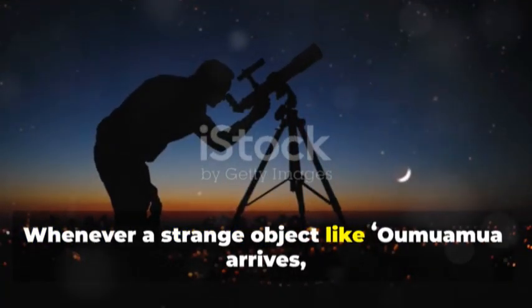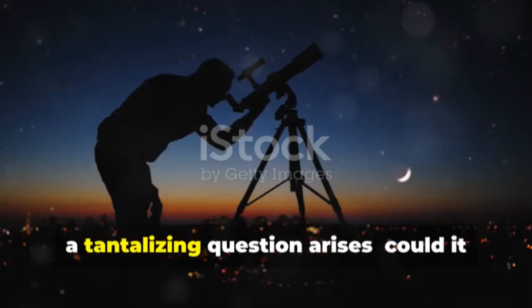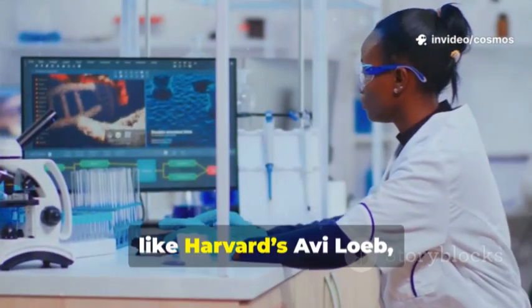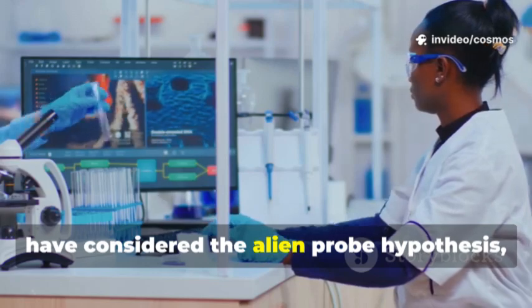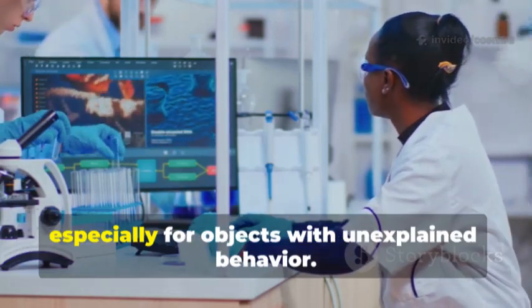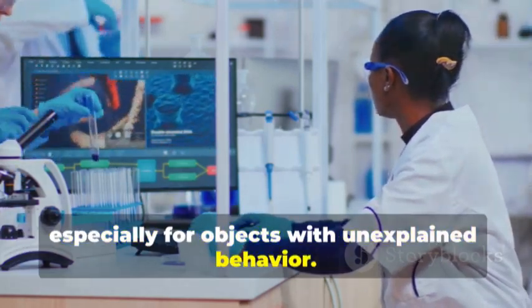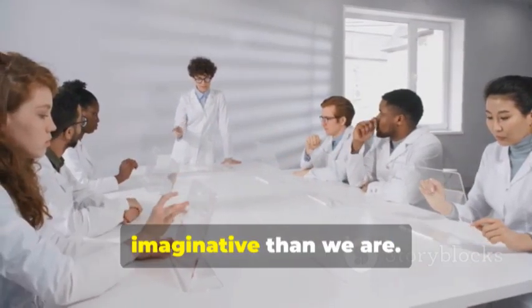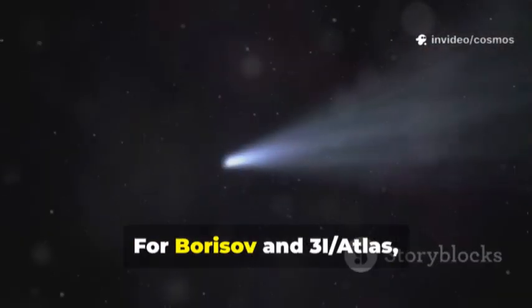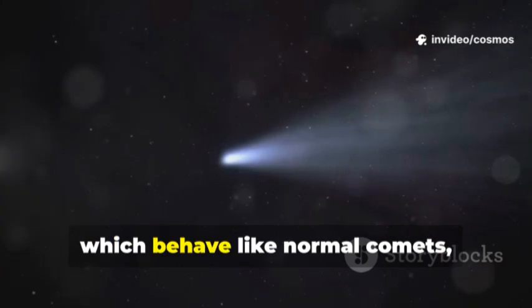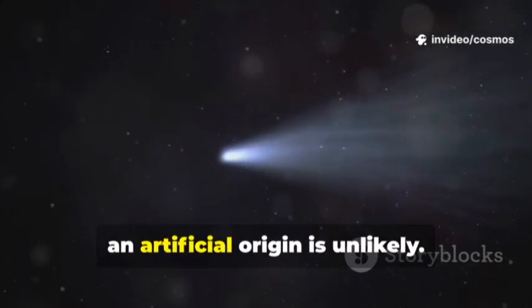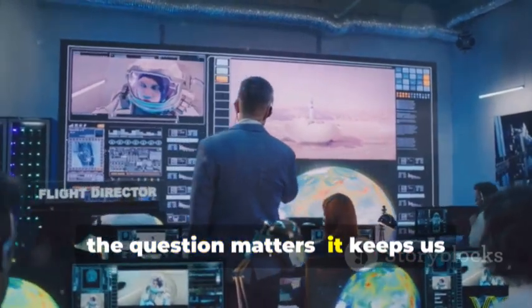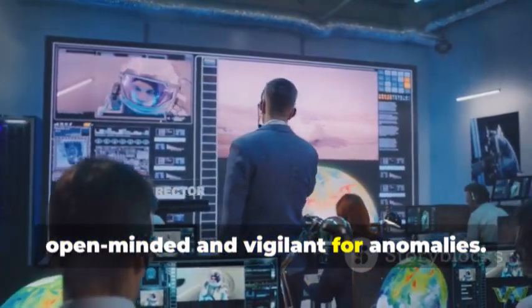Whenever a strange object like Oumuamua arrives, a tantalizing question arises. Could it be artificial? Some, like Harvard's Avi Loeb, have considered the alien probe hypothesis, especially for objects with unexplained behavior. Most scientists favor natural explanations. Nature is often more imaginative than we are. For Borisov and 3I-Atlas, which behave like normal comets, an artificial origin is unlikely. Still, the question matters. It keeps us open-minded and vigilant for anomalies.